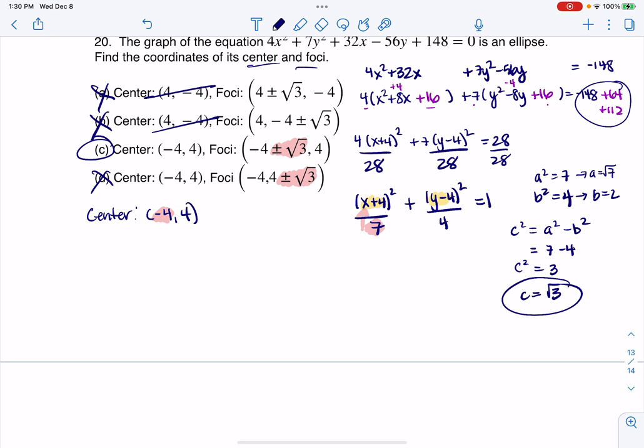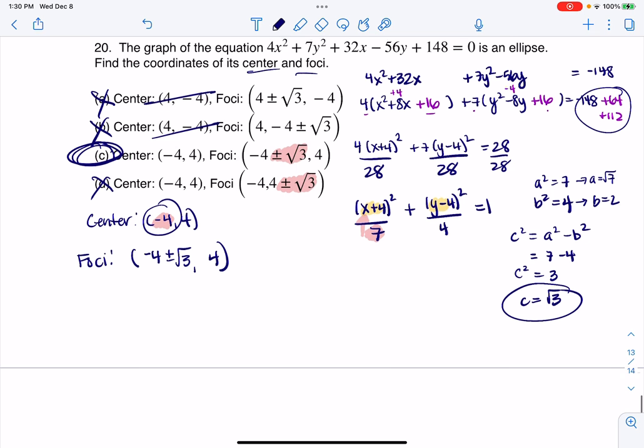So what I'm going to do is I'm going to add and subtract c to my x coordinate of my center, meaning that the foci, because I want to move left and right off of the center, this would be negative 4 plus or minus the square root of 3, and I'm going to stay at the same height of 4. And that's what we're seeing in option c. And so that's how we do number 20.